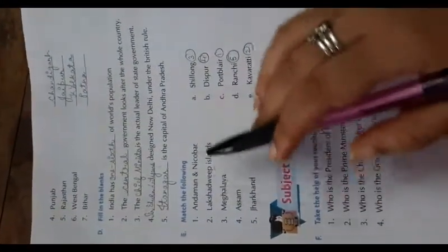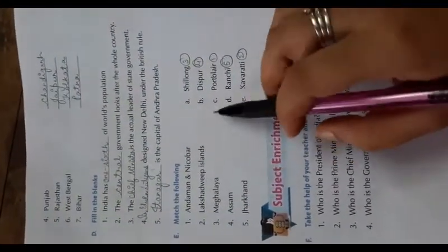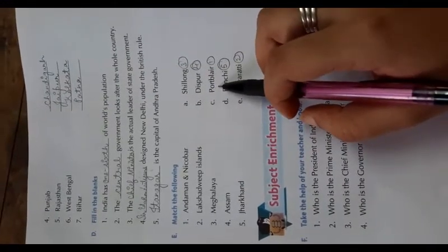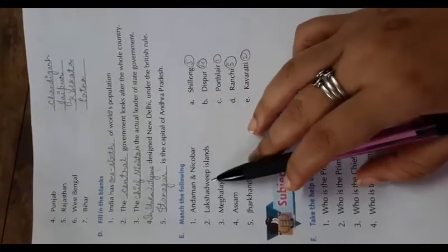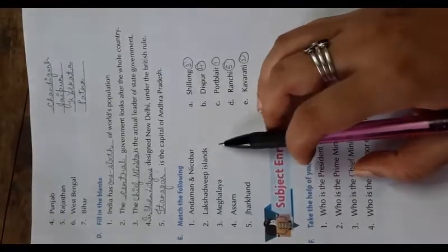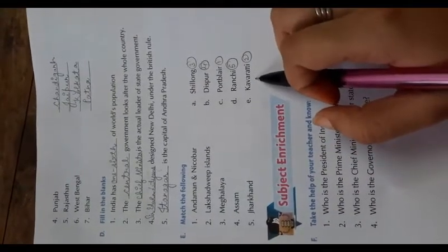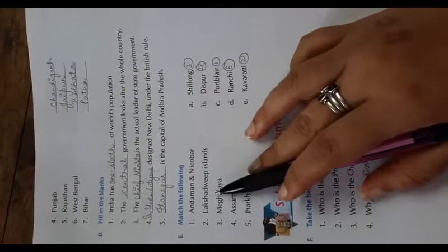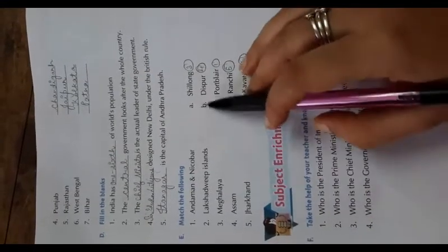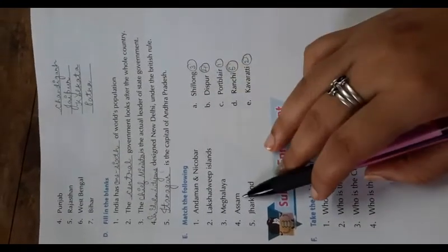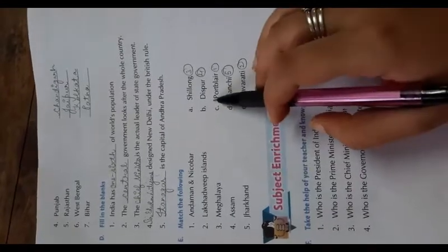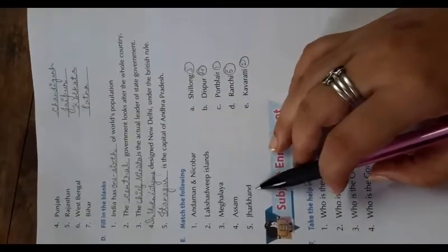Andaman and Nicobar is Port Blair. Lakshadweep island is Kavaratti. Now Meghalaya: Shillong. Assam: Dispur. Jharkhand: Ranchi.